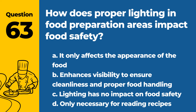Question 63. How does proper lighting in food preparation areas impact food safety? a. It only affects the appearance of the food. b. Enhances visibility to ensure cleanliness and proper food handling. c. Lighting has no impact on food safety. d. Only necessary for reading recipes. Answer: b. Enhances visibility to ensure cleanliness and proper food handling. Adequate lighting is key for safe food preparation.